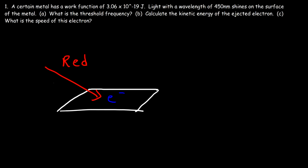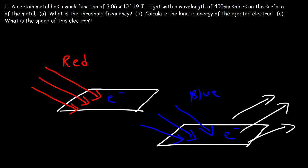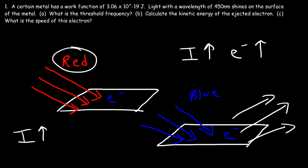It doesn't matter if you increase the intensity of the red light. If you shine more red light photons on this metal, no electrons will be ejected. But if you shine blue light, which has a much higher frequency, electrons will be ejected off the surface. If you increase the intensity of the blue light by adding more photons, more electrons will be ejected. There is a threshold frequency — a minimum frequency at which electrons will be ejected. Once you surpass that frequency, increasing intensity increases the number of ejected electrons. But if you don't reach that threshold frequency, increasing intensity has no effect.